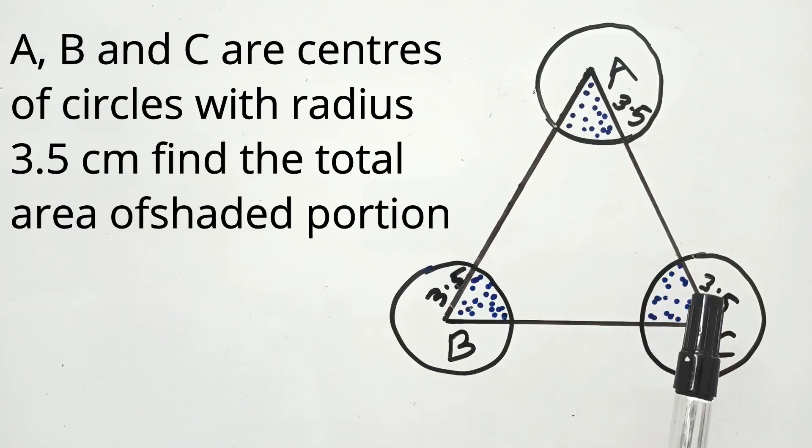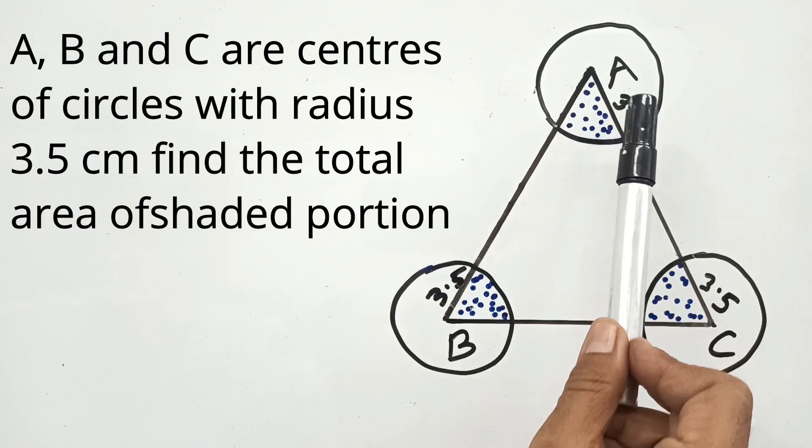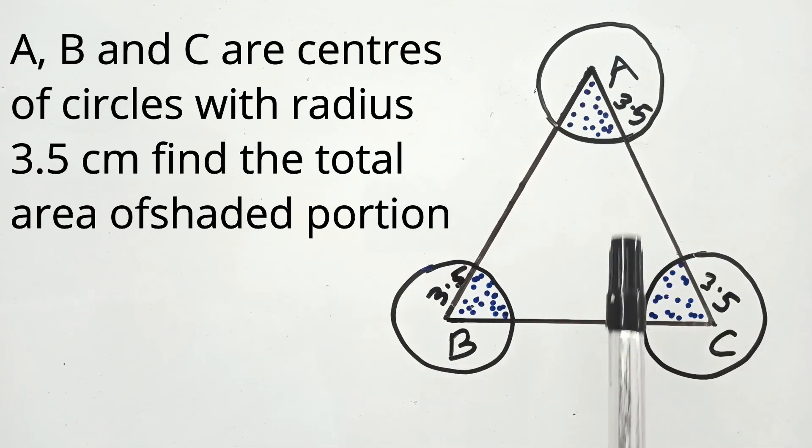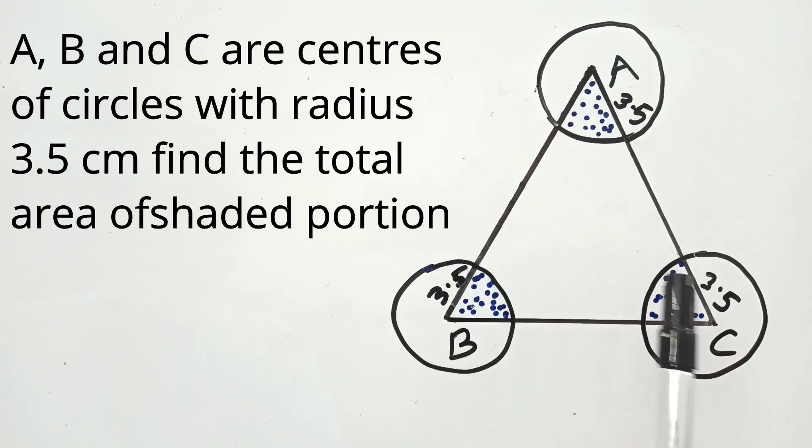In a given diagram, A, B, C are the centers of circles with radii 3.5 cm each. If A, B, C form an equilateral triangle, then we need to find the sum of areas of shaded portion.